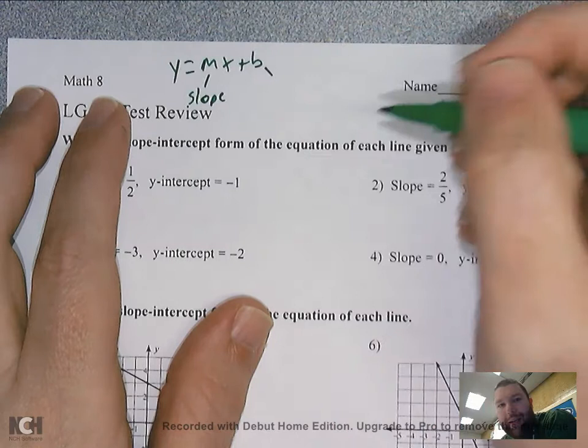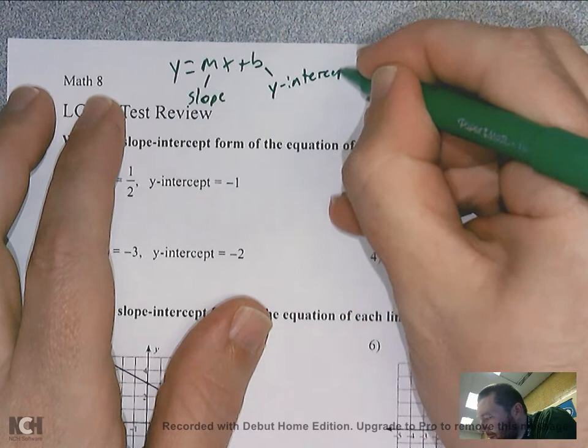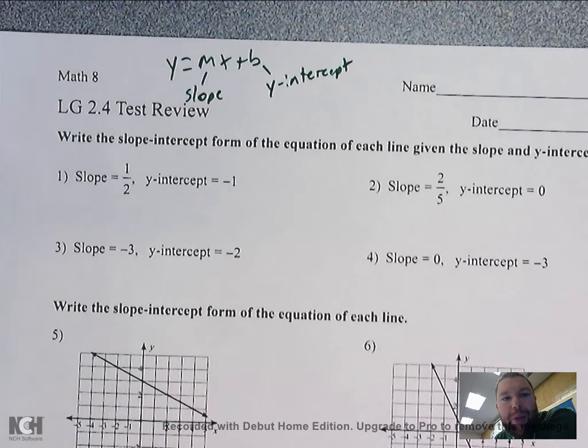The y-intercept is the point on the y-axis where the line crosses it. Those are the two things you need to find to write any kind of linear equation.